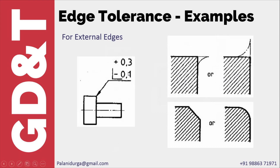Here we have an example where tolerances are in both directions — both plus and minus. If a burr is present, the burr can be up to 0.3 mm and can be either horizontal or vertical. If it is a chamfer or fillet, it should be 0.1 × 45° for chamfer and R 0.1 for fillet radius. So any of these four outcomes is a possibility after manufacturing.